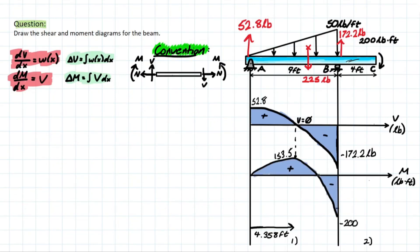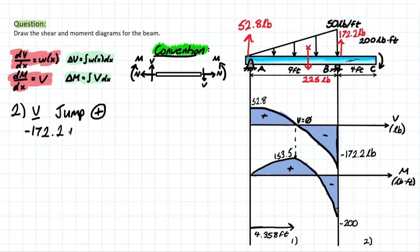The moment section is now added. For section two, we solve for shear and moment. In section two there is no distributed load, only the external moment at the end. At B, the reaction BY creates a positive jump: adding 172.2 to −172.2 brings shear to zero. This makes sense because with no distributed load, the area under the load curve is zero, meaning no change in shear — so shear remains zero throughout the entire section.